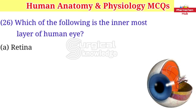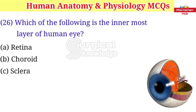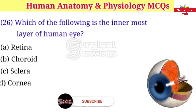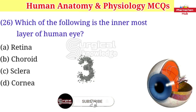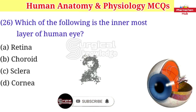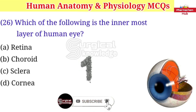Which of the following is the innermost layer of the human eye? A. Retina B. Choroid C. Sclera D. Cornea. Right answer is retina.